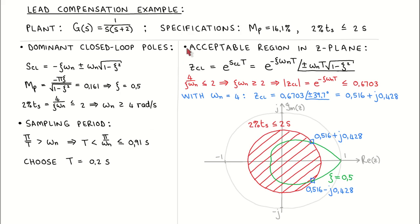We now map the specifications to an acceptable region in the z-plane. The mapping of the s-plane to the z-plane is given here, rewritten as a complex number with its magnitude and angle given in terms of the damping and natural frequency. When we look at the settling time requirement, we see that 4 divided by zeta times omega_n should be less than or equal to 2, which means zeta times omega_n should be greater than or equal to 2. The magnitude of the dominant poles in the z-plane is given by e to the power of negative zeta times omega_n times T, which we calculate as less than or equal to 0.6703. This means the dominant closed loop poles should lie inside a circle with radius 0.6703 in the z-plane, as shown in red.